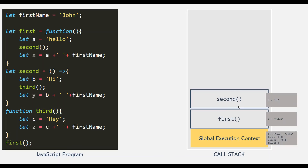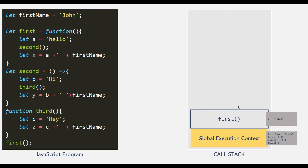And now the execution context of the second function will become the active execution context, and the control will return to the place from where we called the third function. Then inside the second function, we are declaring the variable y. So it will get stored in the execution context of the second function. And then the execution of the second function is also complete, meaning the execution context of the second function will also get popped off from the execution stack. Again, the execution context of the first function will become the active execution context.